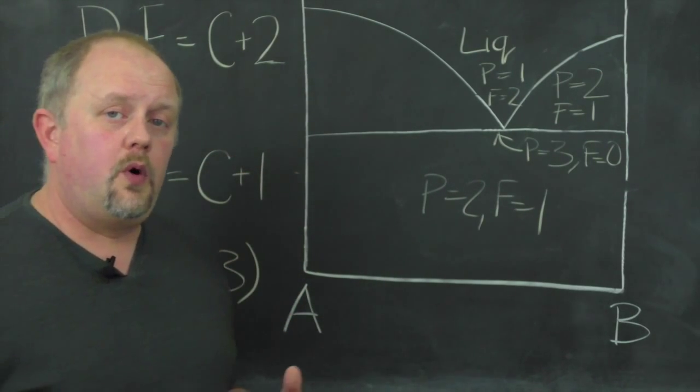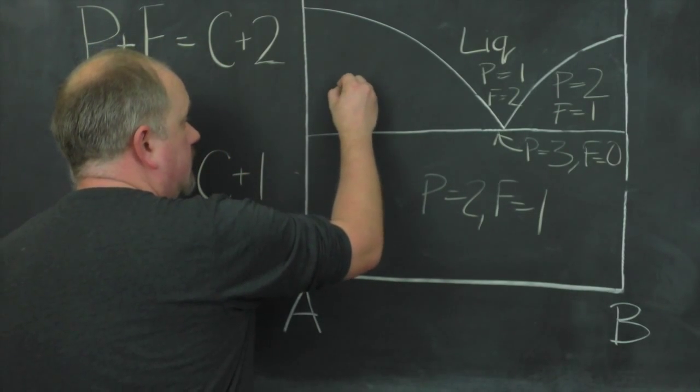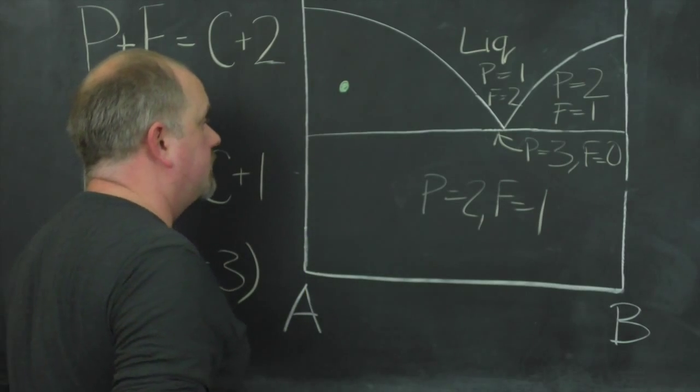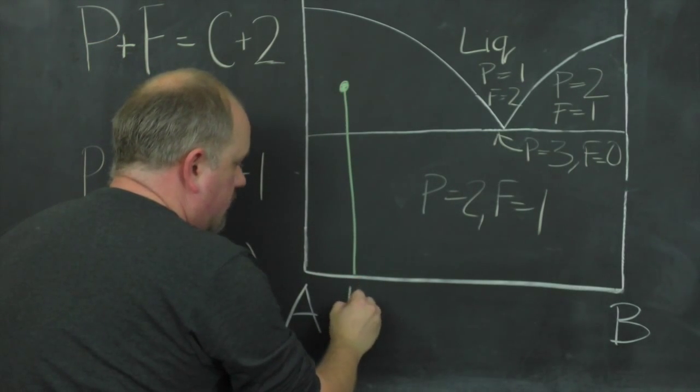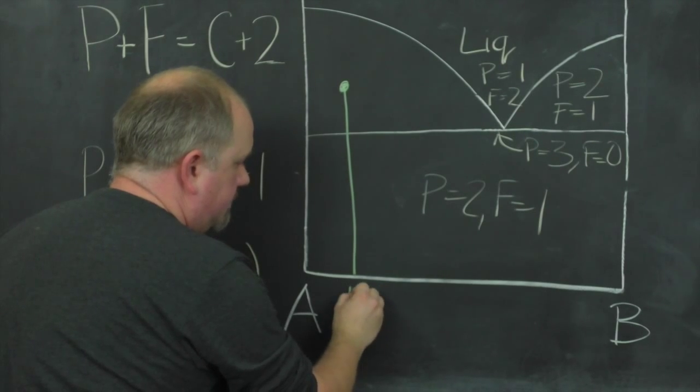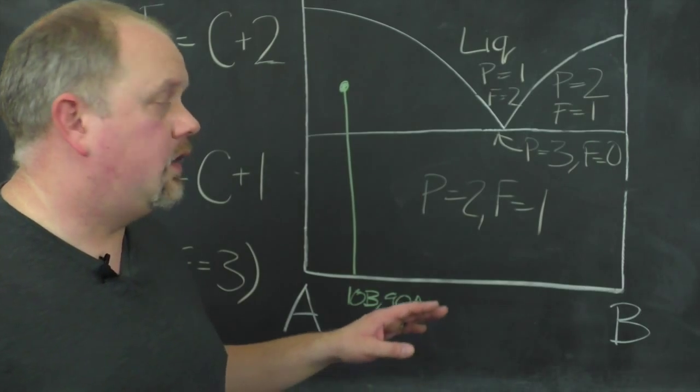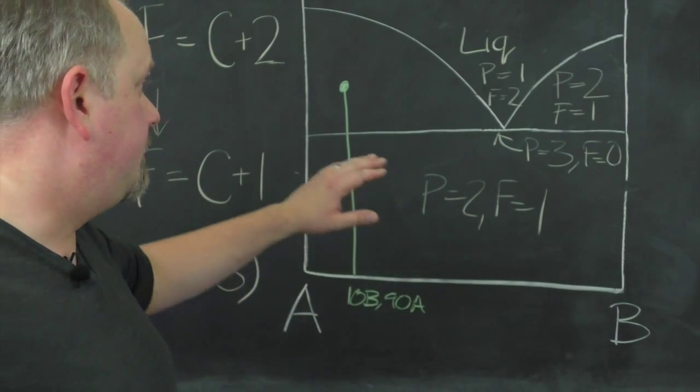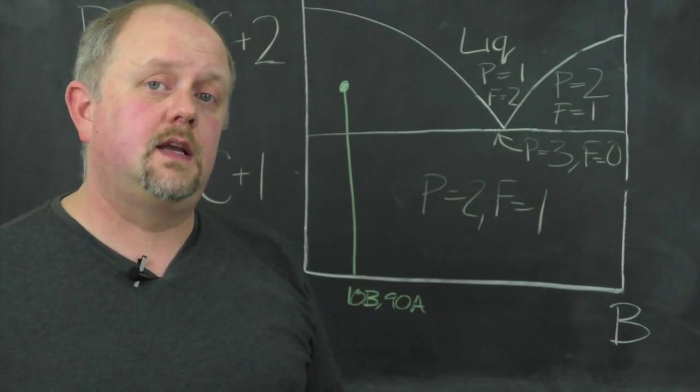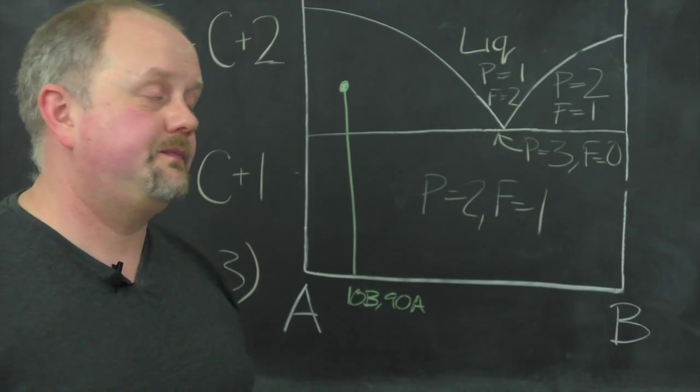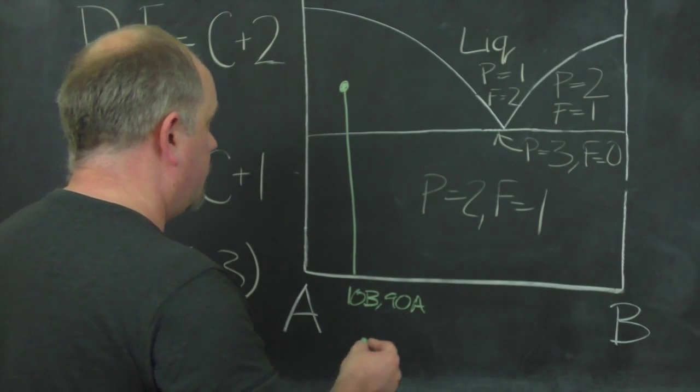Let's imagine we've got a point somewhere in the primary phase field of A. So we'll draw this on here in green. So this point we'll say is roughly composition 10B90A. Okay. So we're in the primary phase field. So at this point, at this temperature, we have a mixture of A plus liquid. But how much of each do we have? And what is the composition of the liquid?